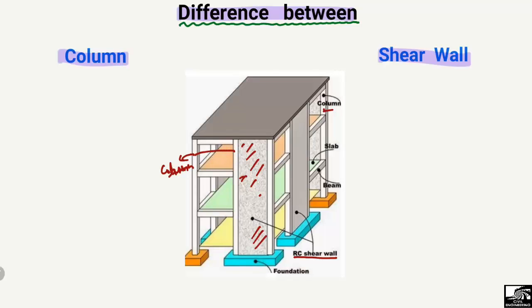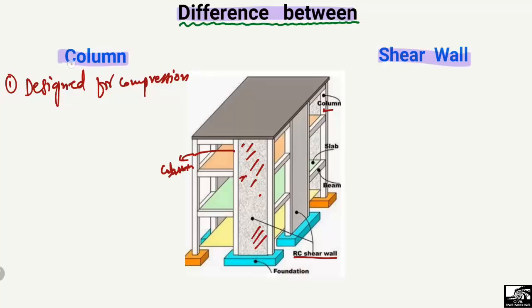A column has very small dimensions compared to the shear wall. The first difference is that column members are designed for compression — most of the compression load is taken by the column — while shear walls are designed for lateral loads.